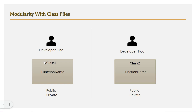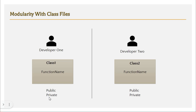In that way we achieve a certain level of modularity, allowing two developers to work individually and merge code without compilation errors. Java also provides access modifiers: if a function is declared as public it can be accessed outside the class, but if it is declared as private it can only be accessed within that class. These access controls further support modularity and allow developers to work on each class individually.